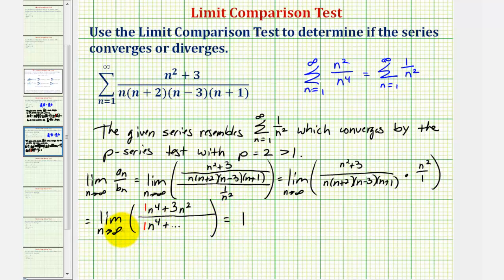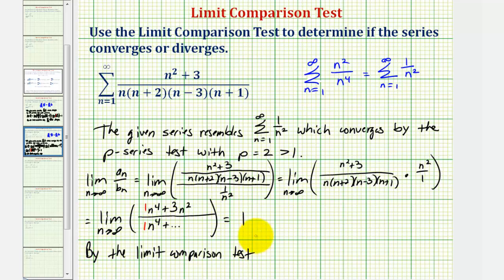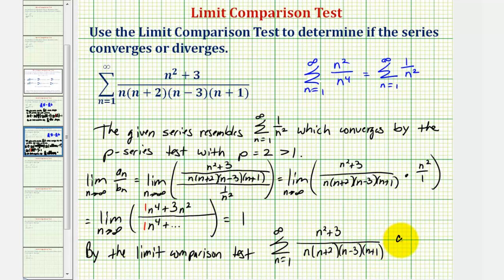So because this limit is positive and finite, and we compared it to the series which we know converges, the given series also converges. So by the limit comparison test, the given series converges.